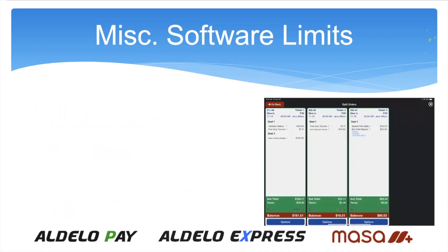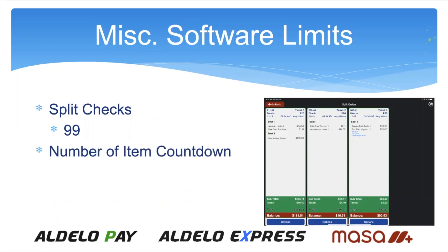Split checks: this was a bit of a debate, but it turned out you can have 99 checks on a single table — so 99 splits. Number of items on a countdown: every item in the database can have its own countdown, so there's really no limit. The only limit is one countdown per item — if you had 10,000 items, you'd have 10,000 countdowns.